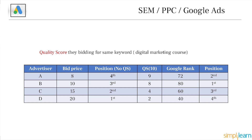So Google introduced a concept called quality score — a test score or check for every keyword we bid on. This applies only to search ads. The system starts analyzing and checking everything from the start to the end based on different factors. The quality score is given out of 10 to every advertiser for every keyword they bid on.